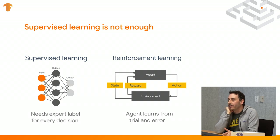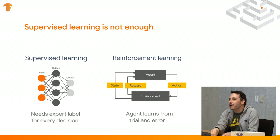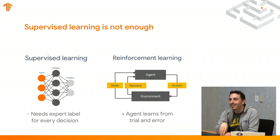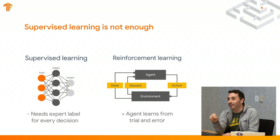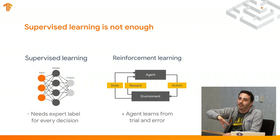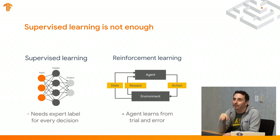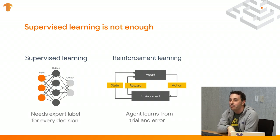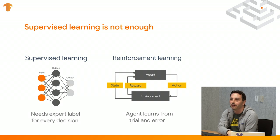You can think about AlphaGo — is one stone really going to make you lose? Probably not. There's no single stone that's going to make you lose. But 200 positions down the line, that stone was actually very critical because it had a ripple effect on all the actions that happened later. You need to be able to estimate this credit assignment — which actions do I need to change to improve my reward overall.